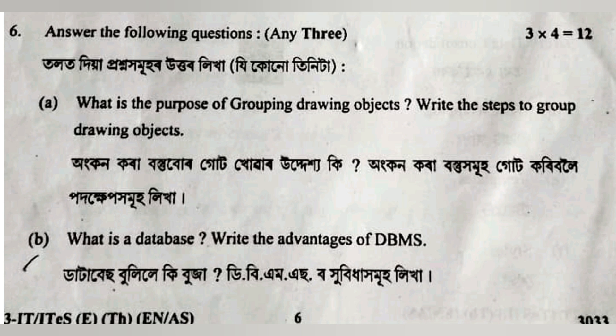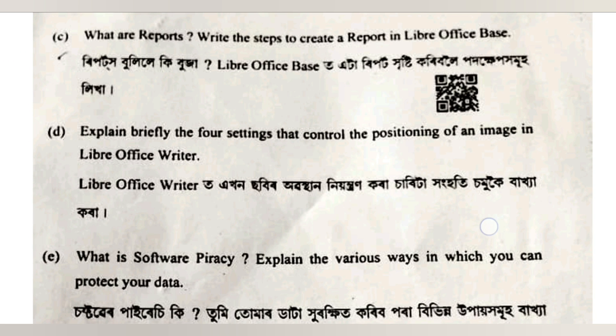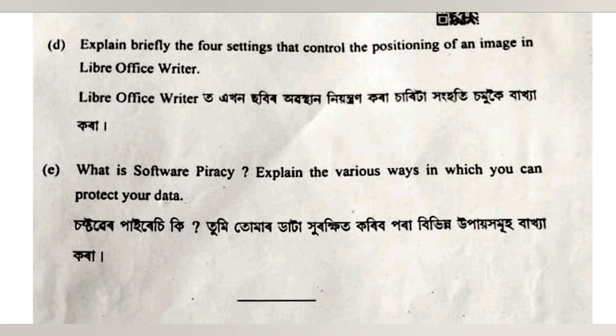What is a database? The systematic way of representing information in a computer is known as a database. The advantages of DBMS are available. Number D: explain briefly the settings for controlling the positioning of an image in LibreOffice — you can control the text behind the text, over the text, or through the text. Then, what is software piracy? When someone uses software without a genuine license, or if someone is making a copy of paid software, it is called piracy.